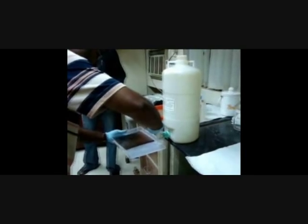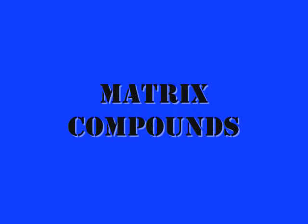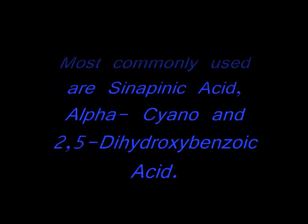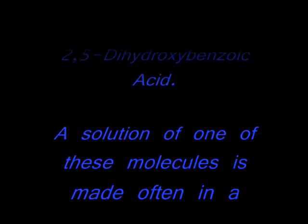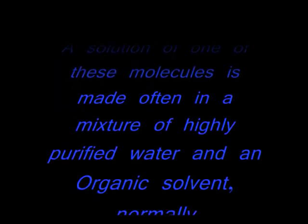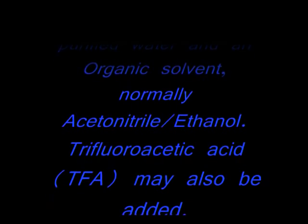The proteins on the gel are detected as distinct spots which can be assigned X and Y coordinates according to their isoelectric point and molecular weight respectively. The proteins of interest can then be identified. These proteins can be subjected to proteolytic cleavage or otherwise mixed with a matrix to be loaded onto the sample plate. The matrix consists of crystallized molecules, of which the three most commonly used are 3,5-dimethoxy-4-hydroxycinnamic acid or sinapinic acid, alpha-cyano-4-hydroxycinnamic acid, and 2,5-dihydroxybenzoic acid. A solution of one of these molecules is made often in a mixture of highly purified water and an organic solvent, normally acetonitrile or ethanol.